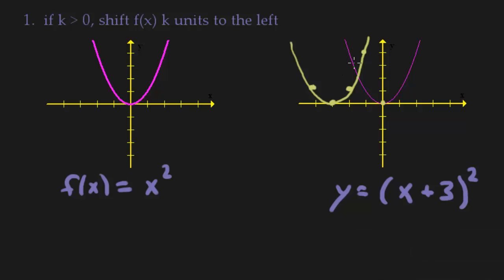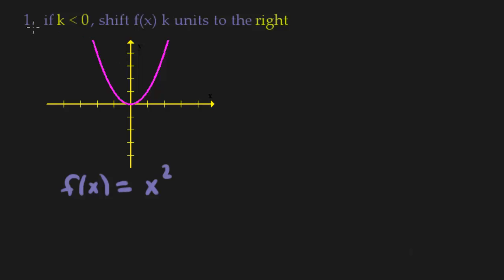Okay, next. So now this is actually step 2, or part 2. If k is less than 0, meaning it's negative, shift your function k units to the right.